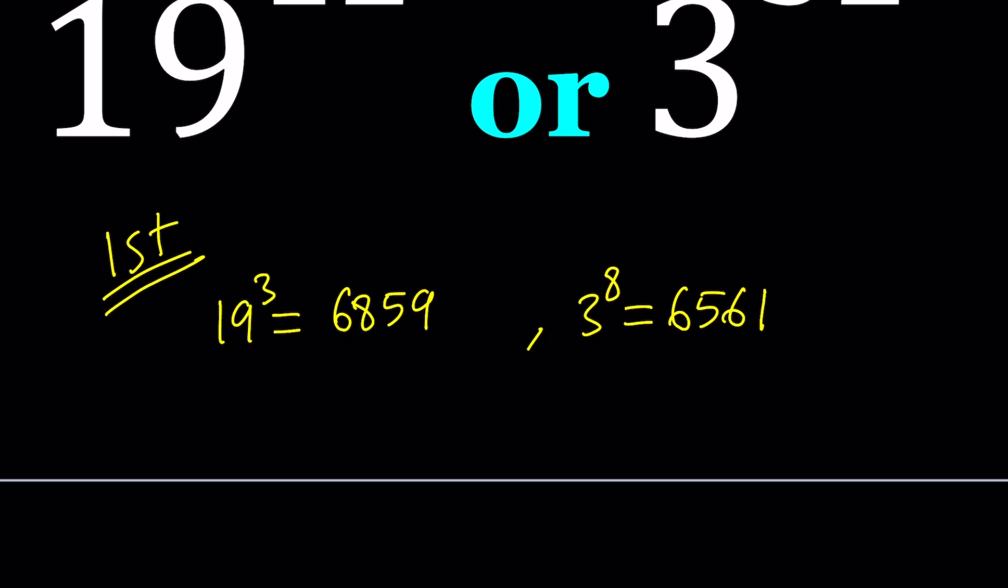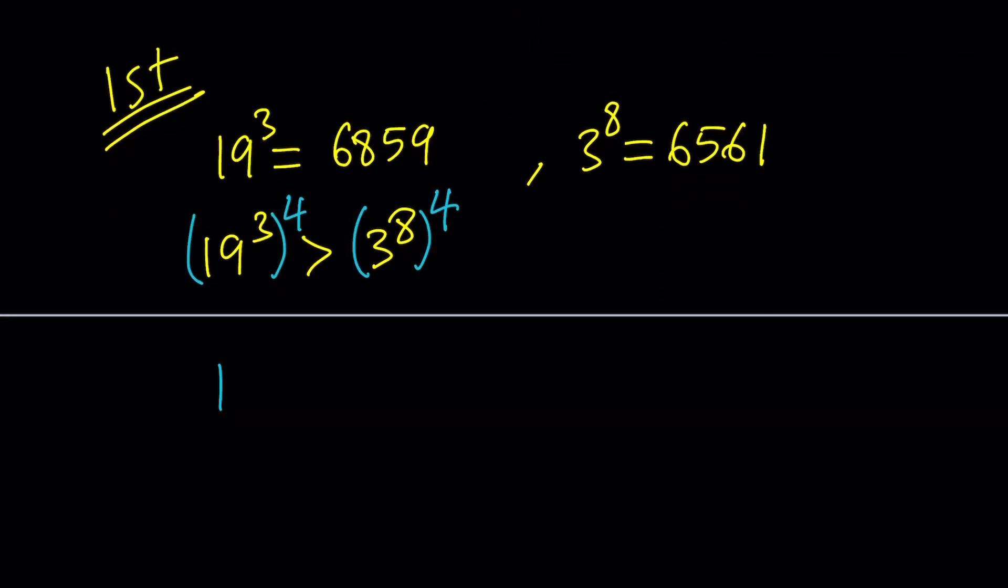So here's what we're going to do. Since 19 to the 3rd power is greater than 3 to the 8th power, as you can see, 6,800 and 6,500, we're going to raise both sides to the 4th power.